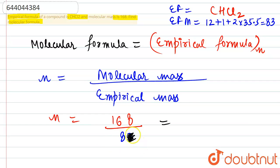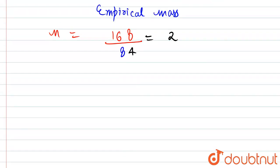So let's write 84 here. So from here n value comes out to be equal to 2. Now once we have n, we can easily find the molecular formula from the expression empirical formula CH Cl2 into n that is 2.